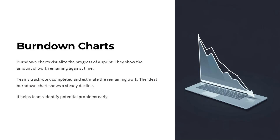Burndown charts are a powerful tool for visualizing the progress of a sprint. They show the amount of work remaining over time, with the ideal chart showing a steady decline, helping teams identify potential problems early and stay on track. Burndown charts give teams visibility into how much work has been completed and how much is left, allowing them to proactively address any issues. The data behind the chart helps drive discussions and decision-making for the team.